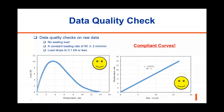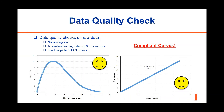Once the testing is done, obtain the load displacement and displacement time curves from the testing software. These curves should be checked for each specimen as part of test quality control. No seating load shall be applied at the beginning of the test, and the loading rate of 50 ±2 mm per minute shall be maintained throughout the test until the load drops below 0.1 kN or less. The figure on the left shows an acceptable load displacement curve and the figure on the right shows an acceptable displacement time curve, which shall have a slope of 0.83 when displacement is in mm and time is in seconds.